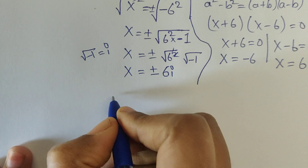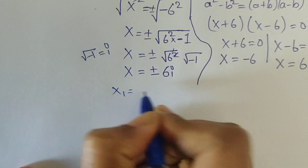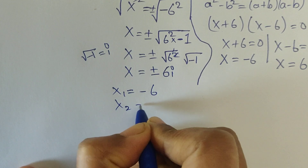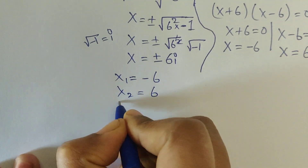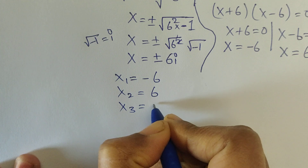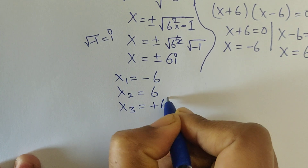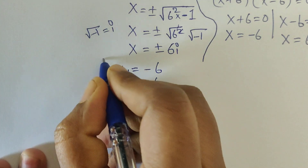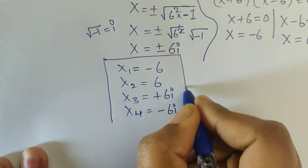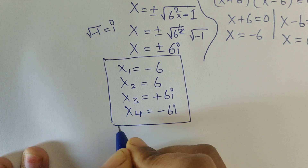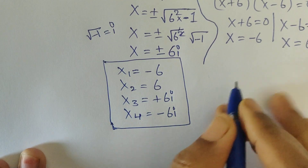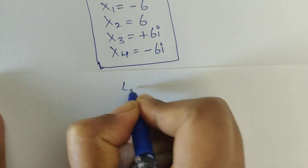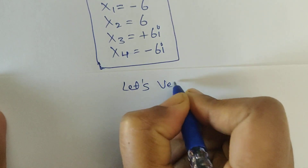So here we got four solutions: x1 equals minus 6, x2 equals 6, x3 equals plus 6i, and x4 equals minus 6i. These are the solutions — these are the x values. Now let's verify whether these values are right or not.